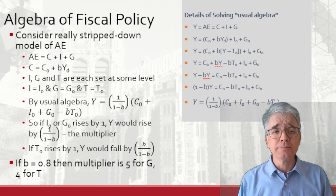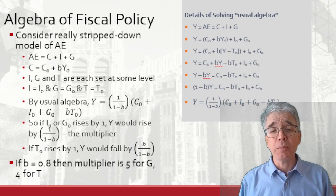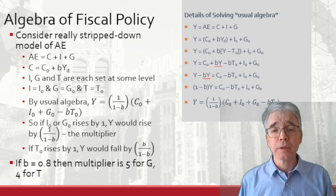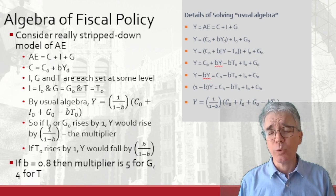The multiplier, showing how much Y changes with changes in I, is going to be 1 over 1 minus B. So if B were 80%, then the multiplier is going to be 5. We've done all this before.